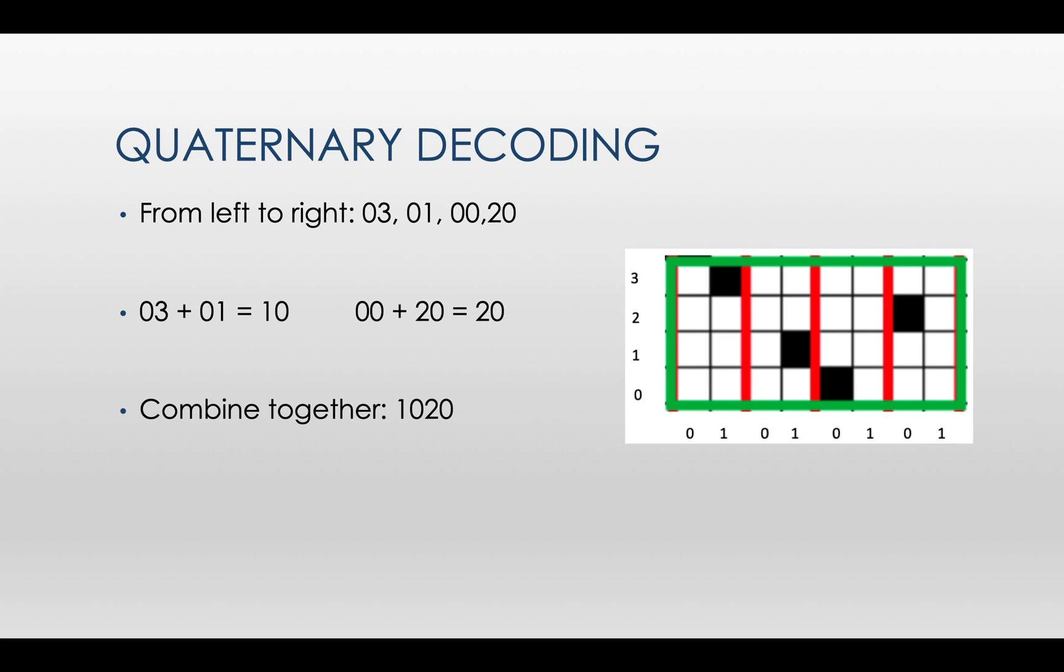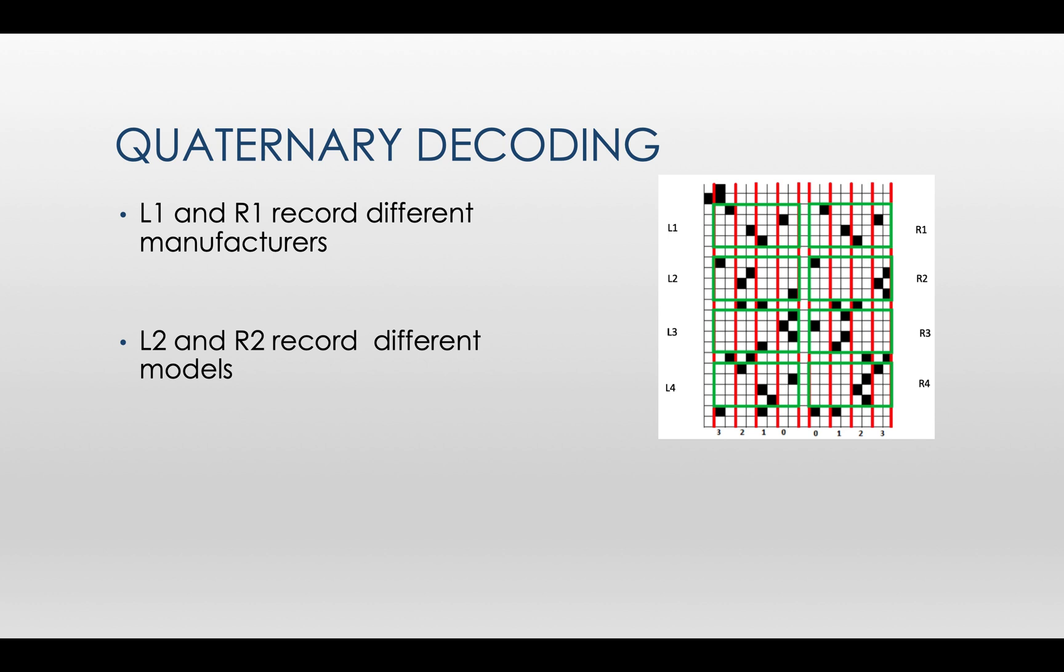The same way, we read out the quaternary numbers stored in the rest of the 7 patterns. After checking the system information of the printer, we can conclude that the top two patterns record the manufacturer and the second two patterns record the model type. These two tables show the system information for the corresponding printer.